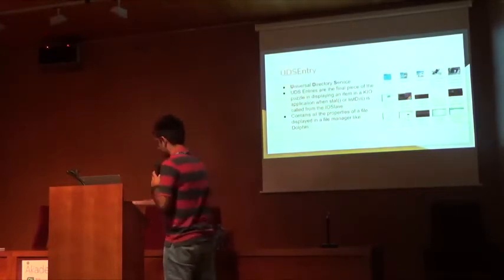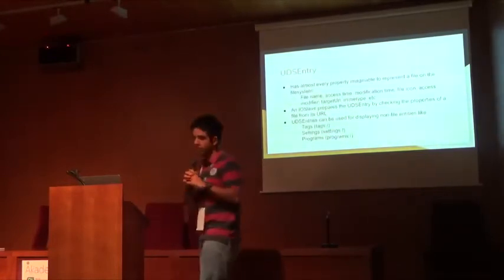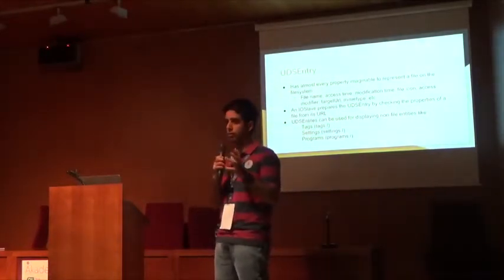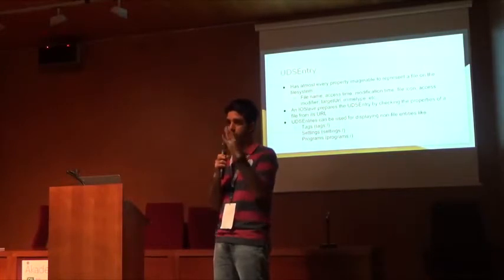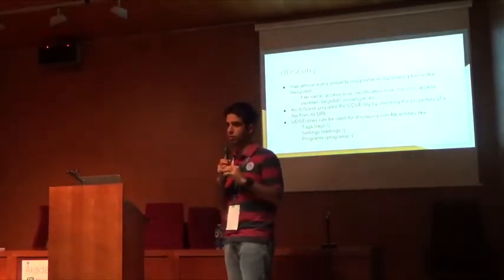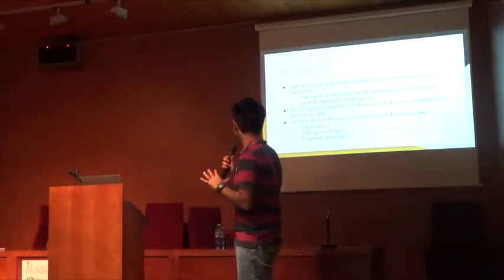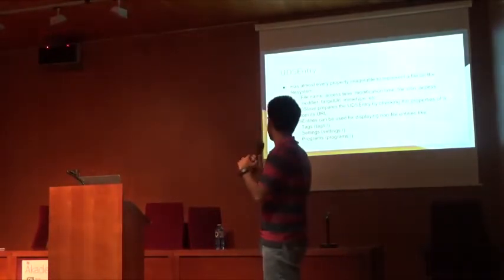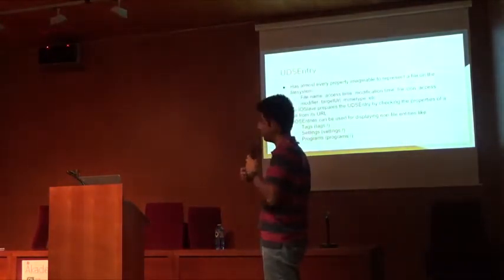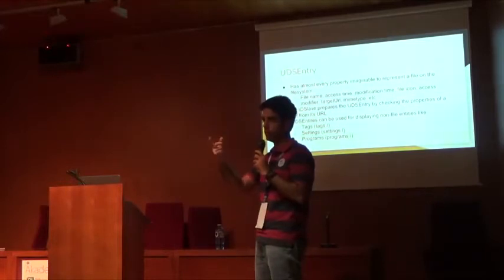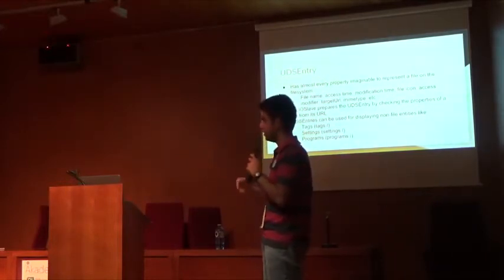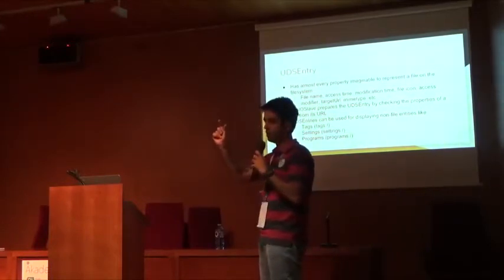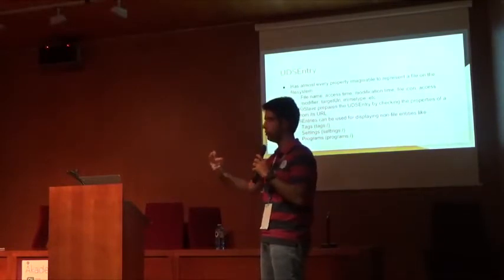UDS entries don't actually have to represent files — they can also represent things which are not files. If you open Dolphin and type in settings:/, you can see the list of settings on your computer, and this is because of UDS entries which don't need to represent files. They're just objects which can store data. You can make a UDS entry which is a directory even though it's not actually representing any directory, and have items under that. That's exactly what the settings KIO slave does — it takes a settings top category, makes it a directory, and then makes subcategories as subfolders.